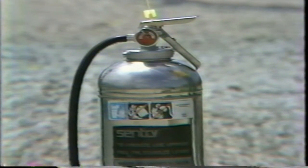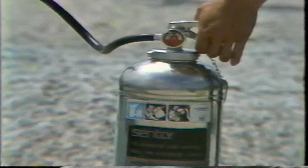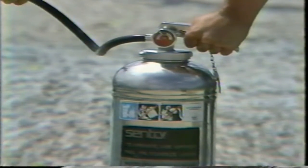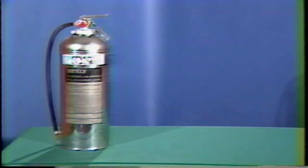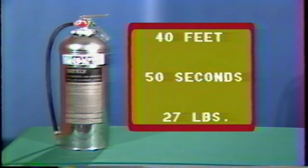To operate the unit, pull the ring pin. Grasp the nozzle and direct it at the base of the burning material. Squeeze the operating lever. This extinguisher carries a rating of 2A, meaning it is capable of extinguishing about 12 pounds of excelsior spread out in layers 4 feet wide and 8 feet long. It has a range of 40 feet and an effective discharge time of 50 seconds. Total weight of the unit is 27 pounds.